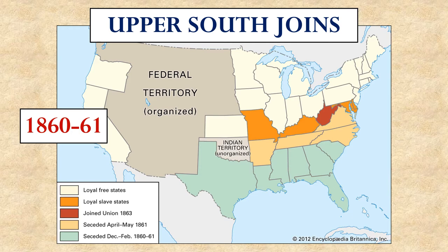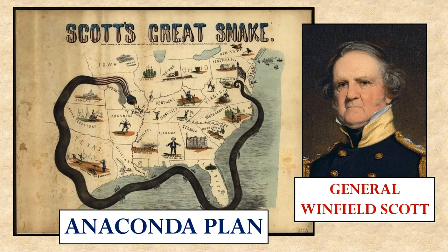After Lincoln actually took office, the Upper South joined the Confederacy. States like Arkansas, Tennessee, North Carolina, and Virginia, believing that there was no opportunity for compromise left. War, then, was upon them.